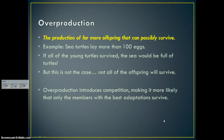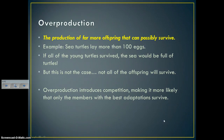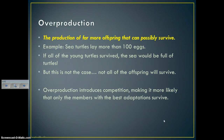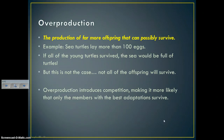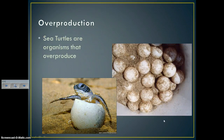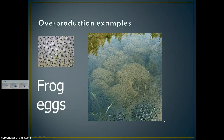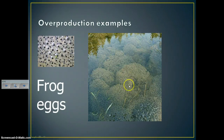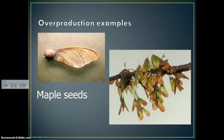Overproduction is the production of many more offspring than can possibly survive. Sea turtles are a great example — one can lay more than 200 eggs in a single season. If all survived, the sea would be full of sea turtles. Out of a nest of 200 eggs, maybe two or three might survive. Overproduction introduces competition, making it more likely that only members with the best adaptations survive, reproduce, and pass those adaptations to future generations. Frog eggs work the same way — out of a huge nest, only a couple dozen might survive into adulthood. Even maple seeds — most helicoptering down will not germinate.